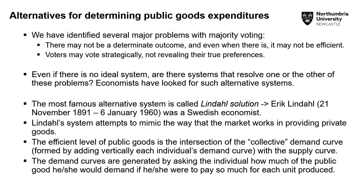We have analyzed the democratic process in the form of majority voting for determining public good expenditures. The conclusion is that there might not be a determinate outcome, and even when there is one, it may not be efficient — for example, when the median voter's income is below average income, resulting in an oversupply of public expenditure. Also, voters may vote strategically and hence will not reveal their true preferences. So there is no ideal system — how can we determine public expenditures?